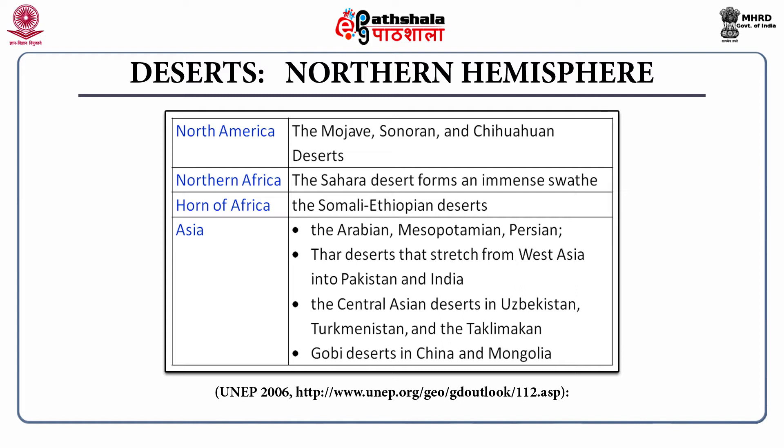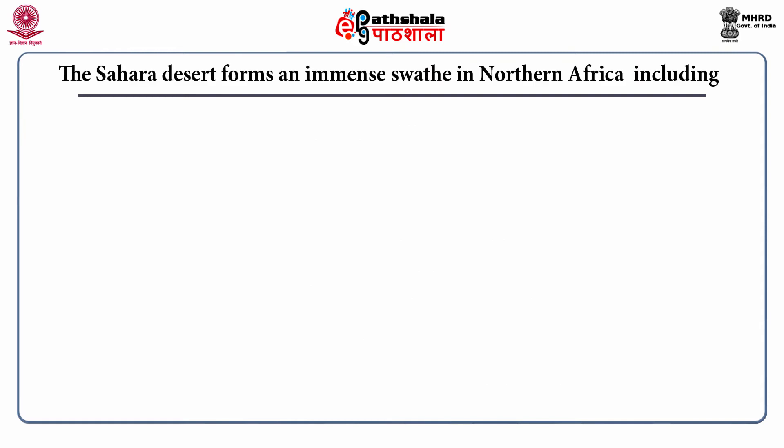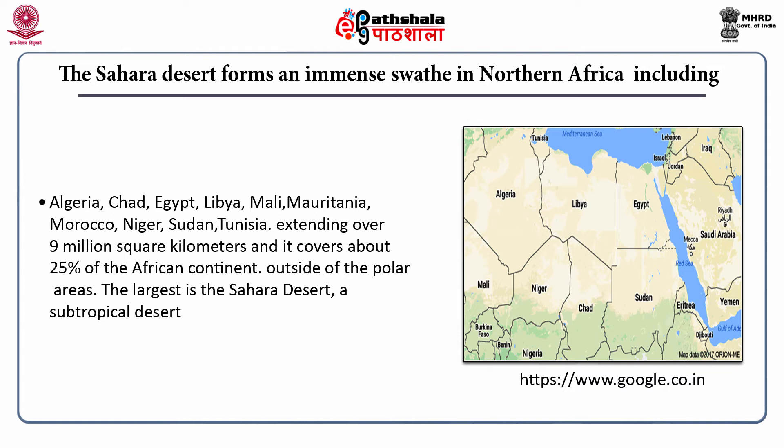The Central Asian deserts in Uzbekistan and Turkmenistan include the Taklimakan, and the Gobi Desert spans China and Mongolia. The Sahara Desert forms an immense swathe in northern Africa, including Algeria, Chad, Egypt, Libya, Mali, Mauritania, Morocco, Niger, Sudan and Tunisia. It extends over 9 million square kilometers and covers about 25% of the African continent. Outside of the polar areas, the Sahara is the largest desert — a subtropical desert.